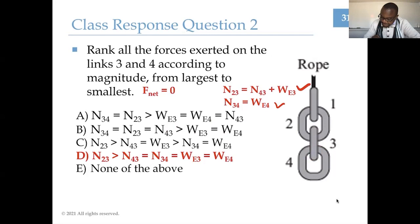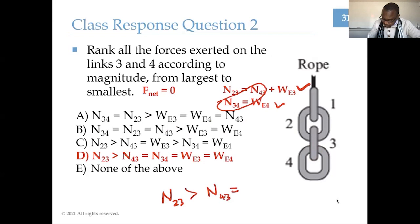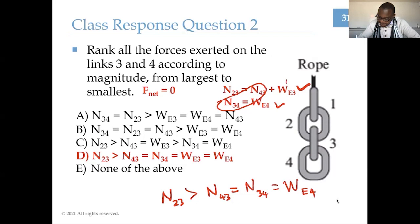Here we have a force exerted on a particle and a displacement D that may or may not be in the same direction as that force. I'd like you to think about ranking the amount of work done on the particle from most negative to most positive. Pause the video, give that a thought, and then submit your answer on Gradescope. Hopefully you found that D is the correct answer ordering. In case four, the force and displacement are in opposite directions, resulting in the most negative work. In case one, the work is most positive because the force and displacement are in the same direction.